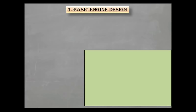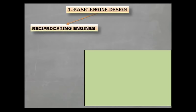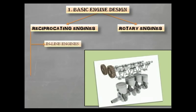The first category of internal combustion engine, that is basic engine design, is divided into two subcategories. First, reciprocating engine and second, rotary engines. The different types of reciprocating engines available are first, inline engines. As shown in figure, the engine cylinders are arranged in a line, thus the name inline engine.